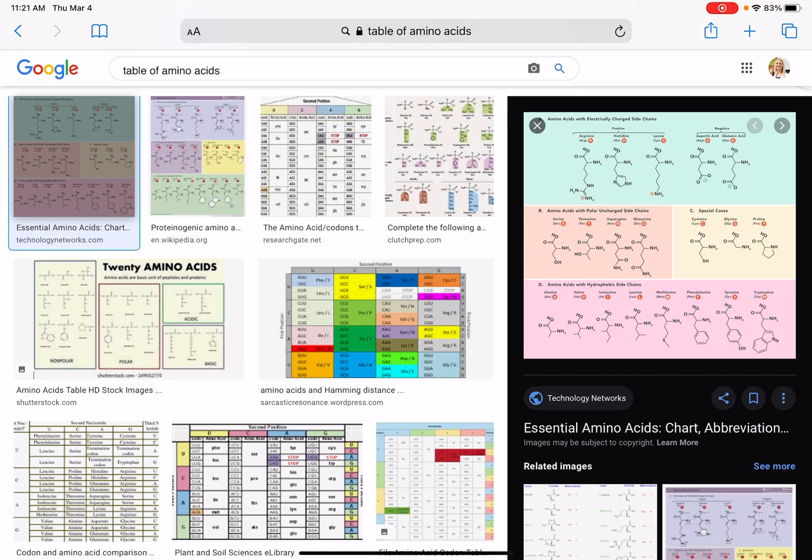You'll also notice that some of these tables are sorting, well, I guess all of these tables are sorting the amino acids into about four different categories. They're based on whether the amino acid is acidic or basic or polar or non-polar.